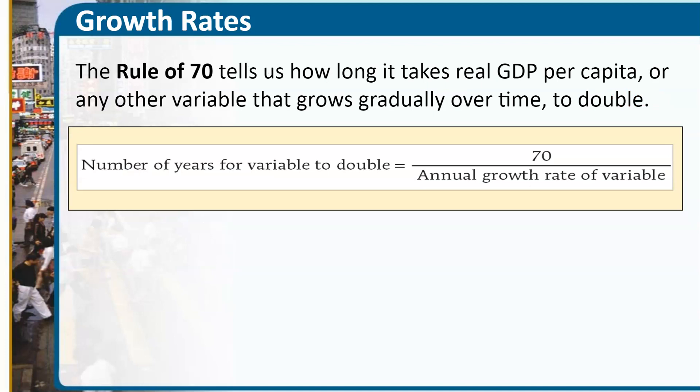Growth rates also apply to financial literacy from a personal finance point of view. The Rule of 70 — also sometimes called the Rule of 72 — is focused on how long it takes for money or investments to double over time. The concept is that you take the number 70 and divide it by the rate of growth. So if we had that 2% growth rate — that 1.9% we saw in real GDP per capita — and we divide 70 by 2%, it would take about 35 years for the economy to double. The same is true for your finances: put $10,000 in a savings account at 2%, and it takes 35 years to double your money.